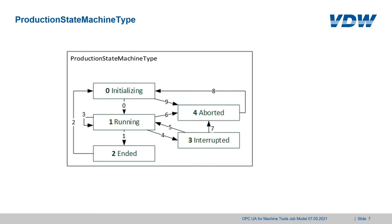The state for the program and the job uses a state machine with five states: initializing, running, ended, interrupted, and aborted. All transitions shown with arrows are possible. Both states and transitions are enumerated and the OPC UA server will always give the name of the state or transition and the number. The appropriate item will be given in the state attribute of the job or of the program.